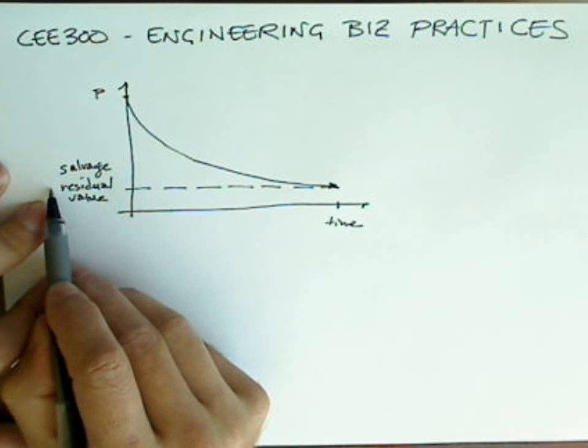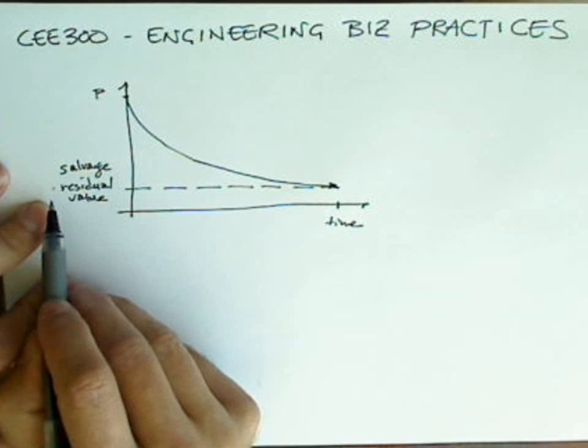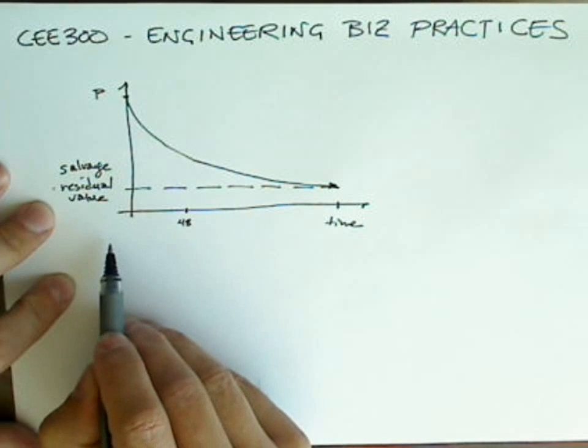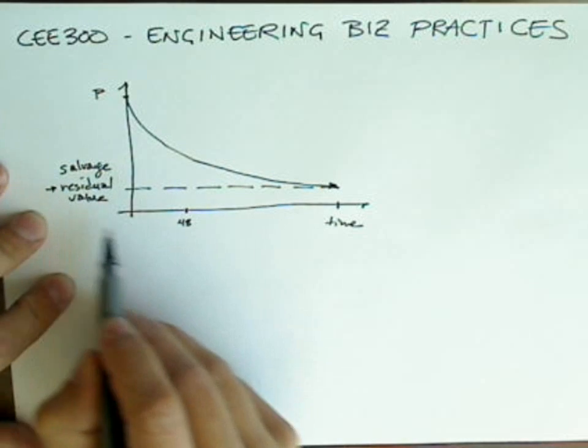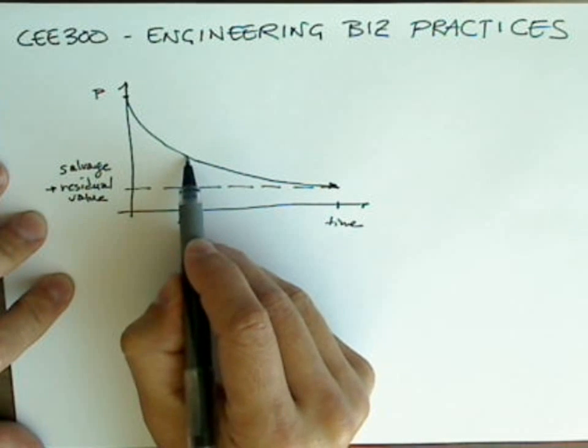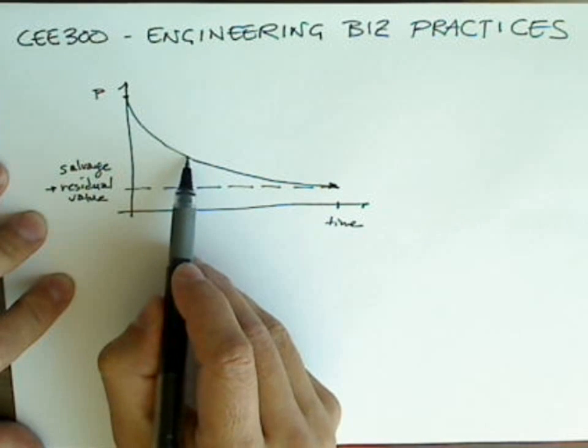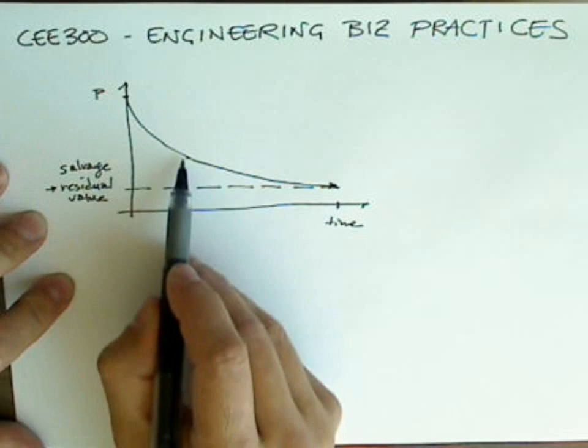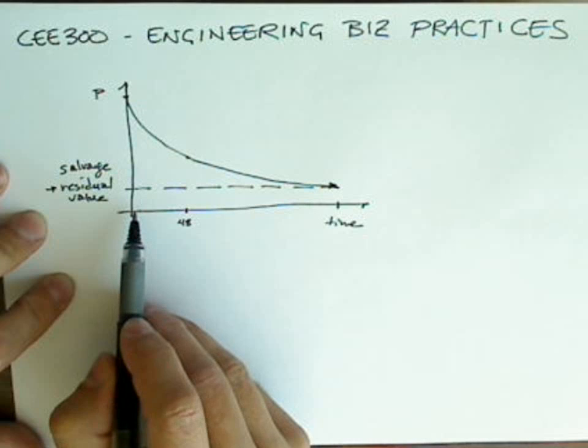We used the term residual value when we were talking about a lease because at the end of the lease, let's say this is 48 months, which is the example that we were giving, the residual value was actually a term that we used for the agreed upon price at which the driver could purchase the vehicle from the leasing company.